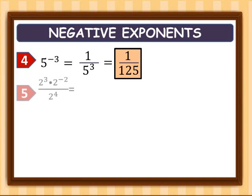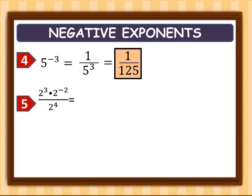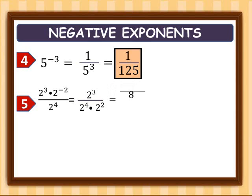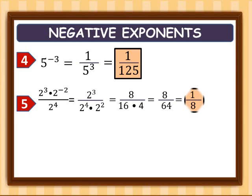Example five: two cubed multiplied by two raised to negative two, over two raised to four. Two cubed is already positive so it stays in the numerator. Two raised to four is positive so it stays in the denominator. Two raised to negative two moves to the denominator. Simplifying: two cubed is 8, two raised to four is 16, and two squared is 4. So we have 8 over 16 times 4, which is 8 over 64, and that simplifies to one over 8.